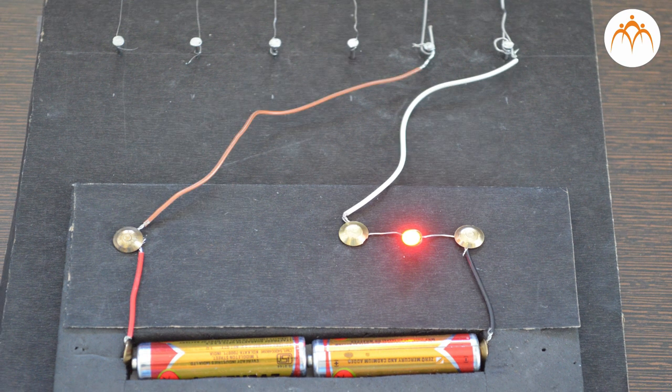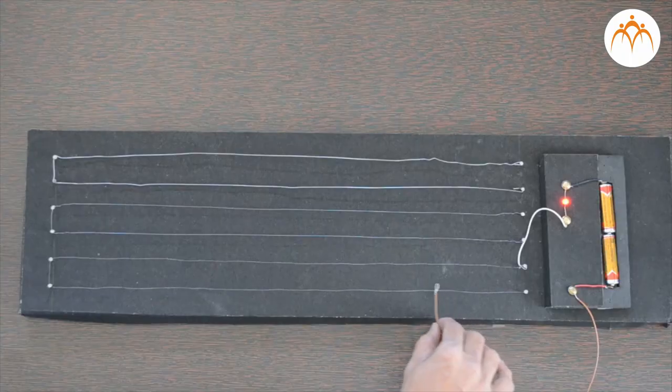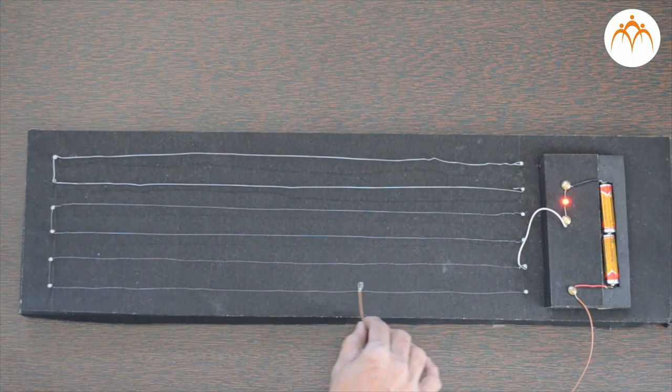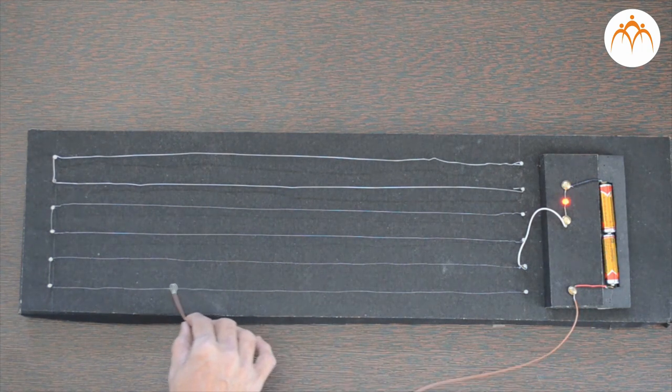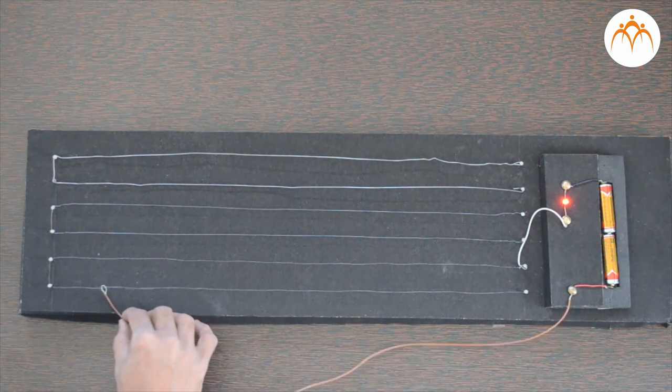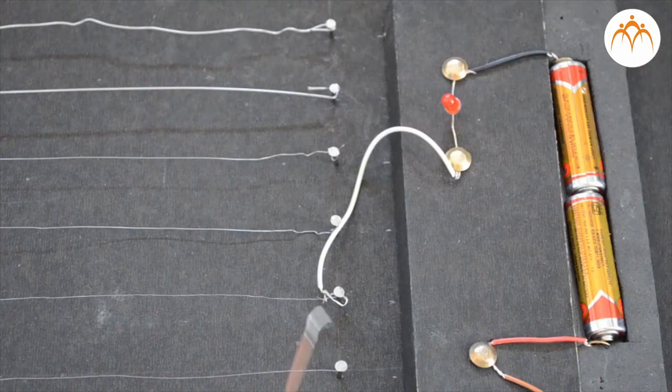Resistance is also dependent on length of the wire. As we slide the brown wire, effective length of the nichrome wire in the circuit changes. More length means more resistance. This can be observed with change in resistance as well as intensity of light.